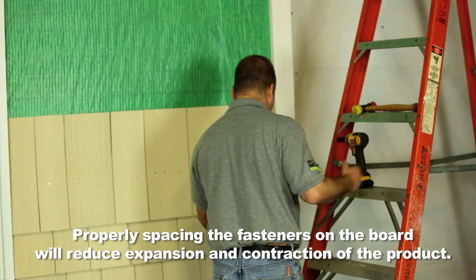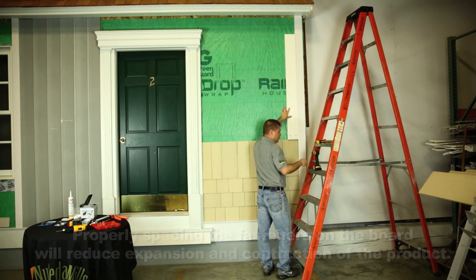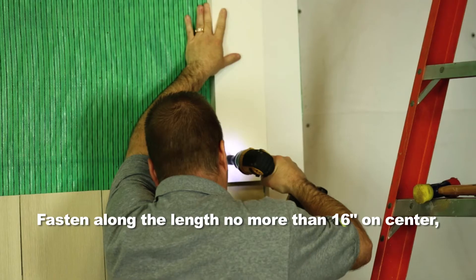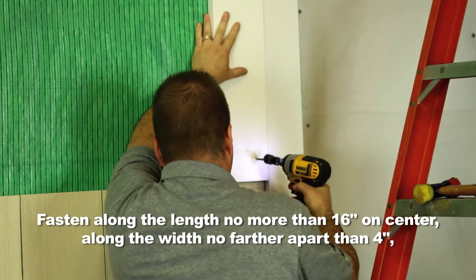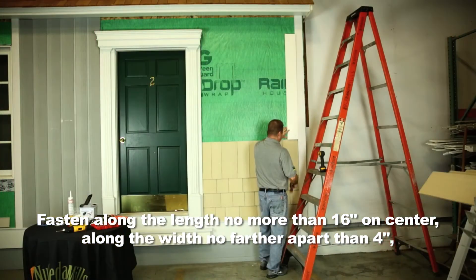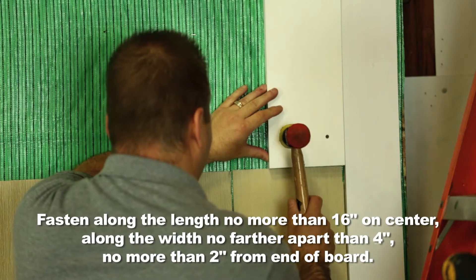Properly spacing the fasteners on the board will reduce expansion and contraction of the product. Fasteners along the length of the board should be no more than 16 inches on center. Fasteners across the width of the board should be no more than 4 inches apart. And you should always have fasteners 2 inches from any end of the board.